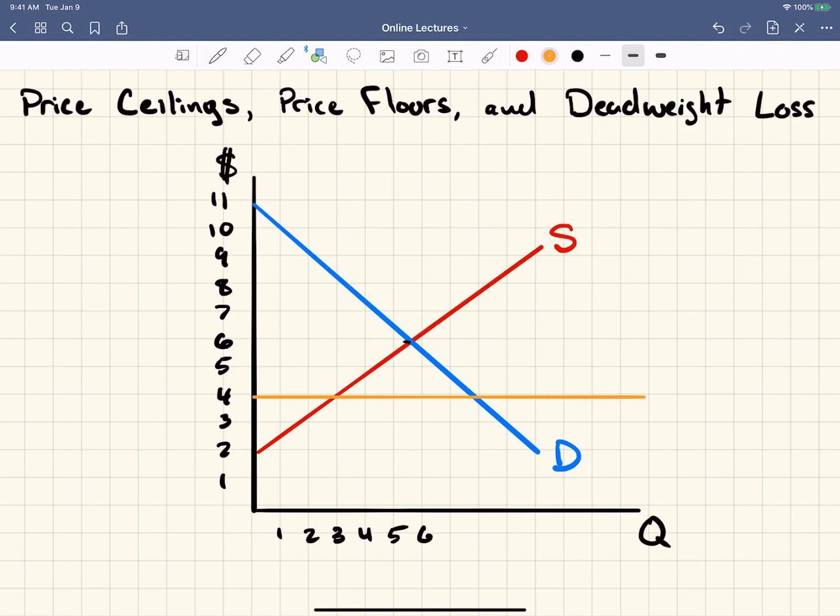Now the price wants to go and wants to tend towards equilibrium, which is at this point, but it can't rise up above it because it hits this price ceiling. This is why it's called a price ceiling.